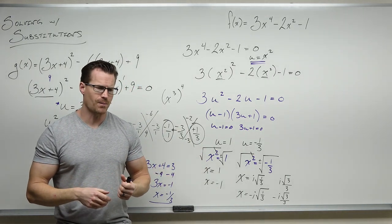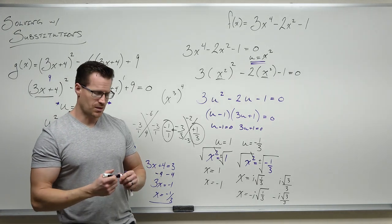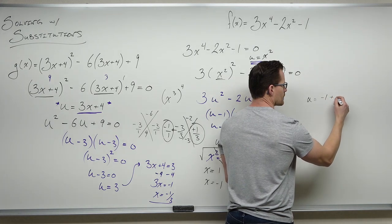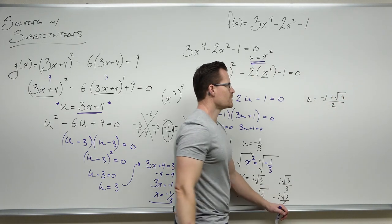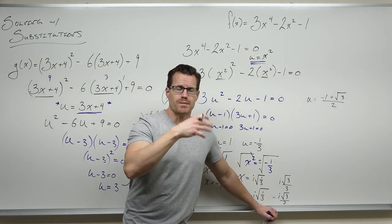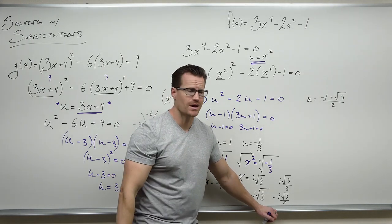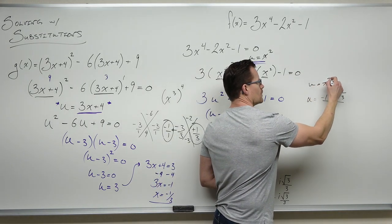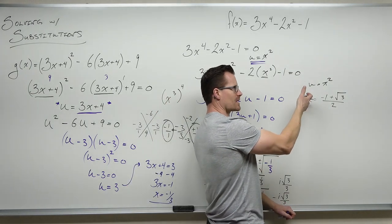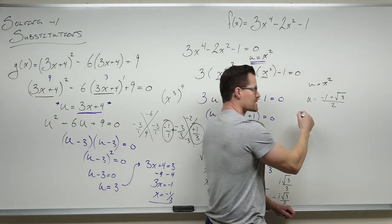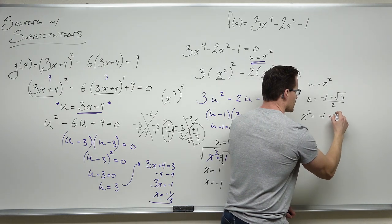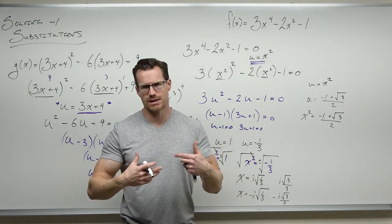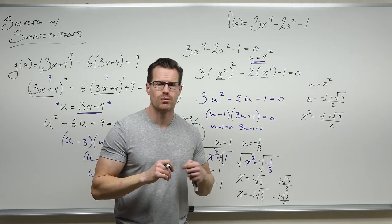I made a comment a while back about what if the quadratic doesn't factor. If it doesn't factor, you use the quadratic formula and get something like u equals (negative 1 plus or minus √3) over 2. And let's say u was originally x squared like in this example. We'd set x squared equal to that expression and take square roots. The only reason this isn't fun is because you end up with square roots inside square roots — but it's certainly possible.